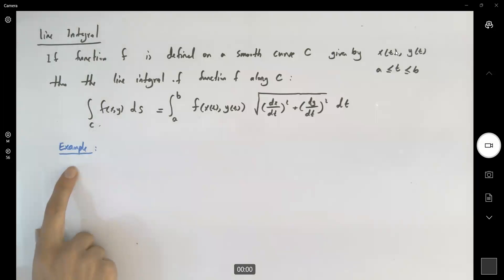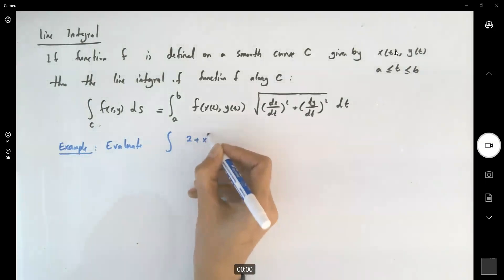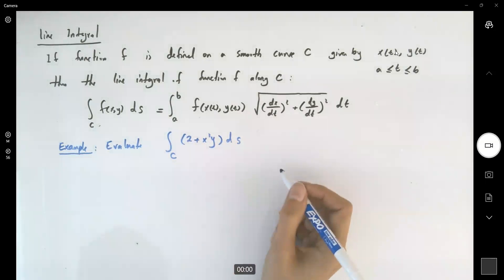Suppose we try to calculate the line integral as follows. Evaluate the line integral, the integral of the function 2 plus x squared y ds along curve C, and your curve C is defined as upper half of the unit circle.